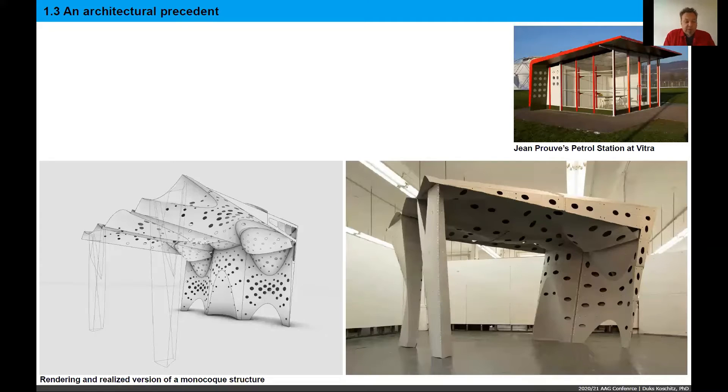The architectural background or reference that we wanted to use was Jean Prouvé's petrol station, which is part of the Vitra collection. One important point here was that there's a moment connection on one side and there are columns on the other, and we used that as a reference in order to get to an architectural scale that is based on sheet manipulation. Jean Prouvé was a master of manipulating metal sheets and stamping them into more rigid surfaces. We, on the other hand, are doing this with curved creases and a different material.